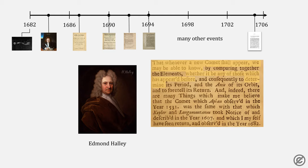Now when every new comet shall appear, he may be able to know whether it be any of those which has appeared before, and consequently to determine its period, axis of orbit, and to foretell its return.